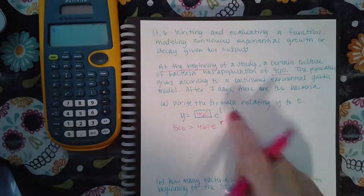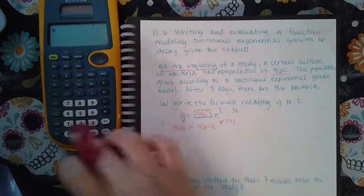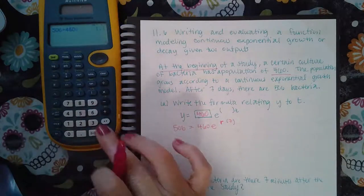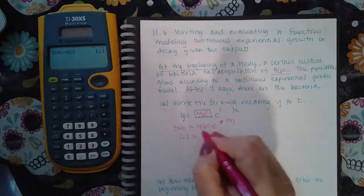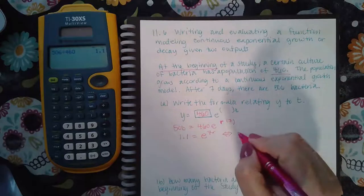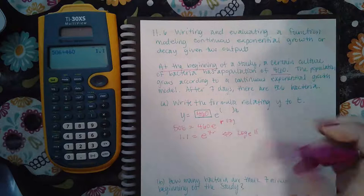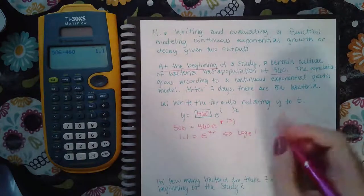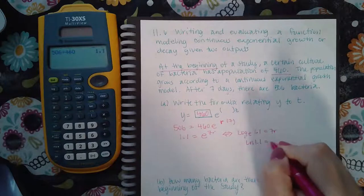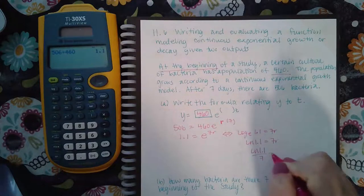And that's why this is blank because I don't know what that is. So what I'm going to do is I'm going to divide both sides by 460 and I get 1.1 and it'll be gone from this side. Then if I switch the forms over, I have log base E of 1.1 equal to seven R, or ln of 1.1 equal to seven R, which means ln of 1.1 over seven equals R.